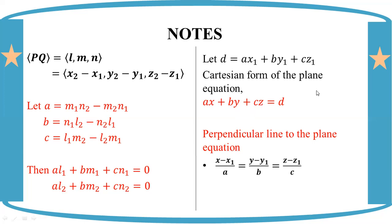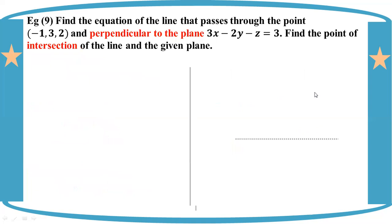Now this is the problem. Find the equation of the line. The equation of the line is the plane equation — the plane passing through point minus 1, 3, 2 and perpendicular to the plane.